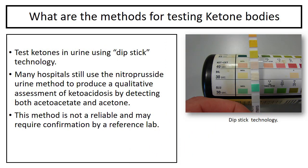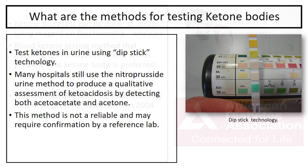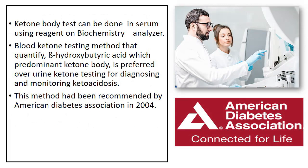What are the methods for testing ketone bodies in the laboratory? Testing ketones in urine using dipstick technology — many hospitals still use the nitroprusside urine method to produce a qualitative assessment of ketoacidosis by detecting both acetoacetate and acetone. This method may not be reliable and may require confirmation by a reference lab. Ketone body testing can also be done in serum using a reagent on biochemistry analyzers.